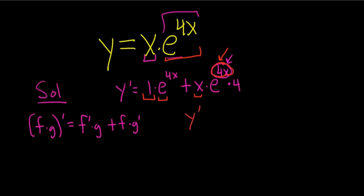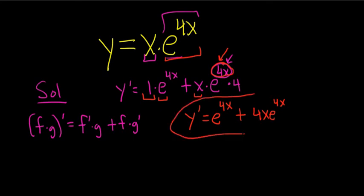So finally, we end up with y prime equals e to the 4x, plus 4x e to the 4x. And that's it. Hope that made sense.